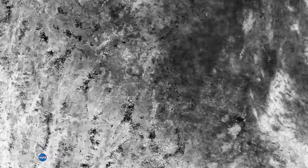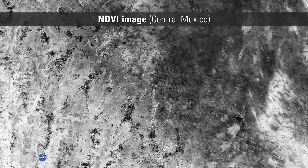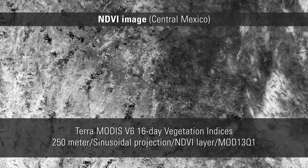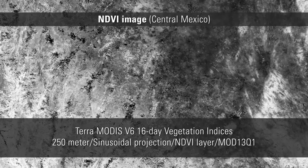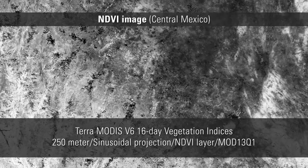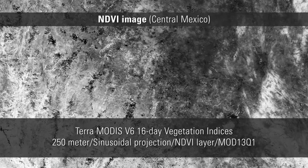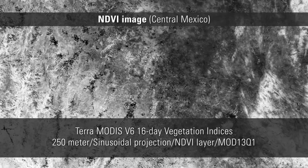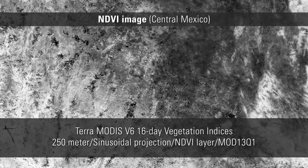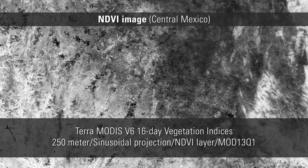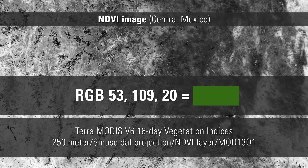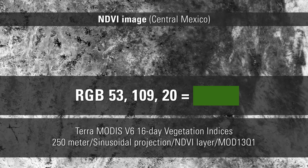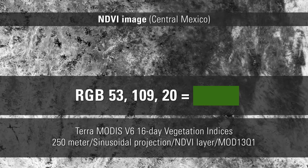Once you have an understanding of these values, you can work with and observe each of the science data sets. Here's an example of an NDVI image of central Mexico from August 12th to 27th, 2016, shown using the Terra MODIS version 6 16-day vegetation indices 250-meter level 3 tiled sinusoidal grid projection product MOD13Q1. NDVI is available as a single science data set. A color map can be used to better visualize variations in the presence of vegetation.